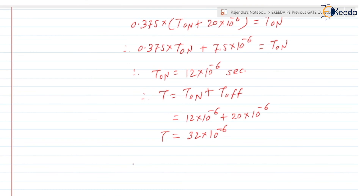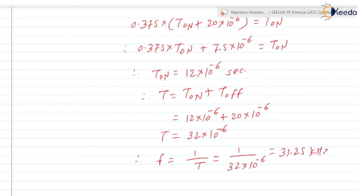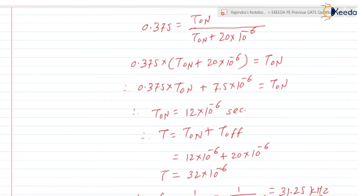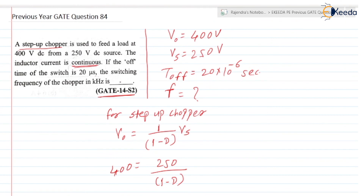This is the total time period T. Therefore, switching frequency F = 1/T = 1 / (32 × 10⁻⁶) = 31.25 kilohertz. So the final answer is 31.25 kilohertz. This concludes question number 84. In the next video we are going to discuss question number 85. Thank you.